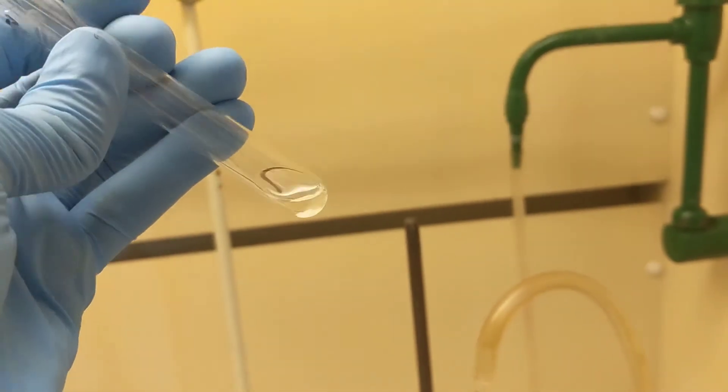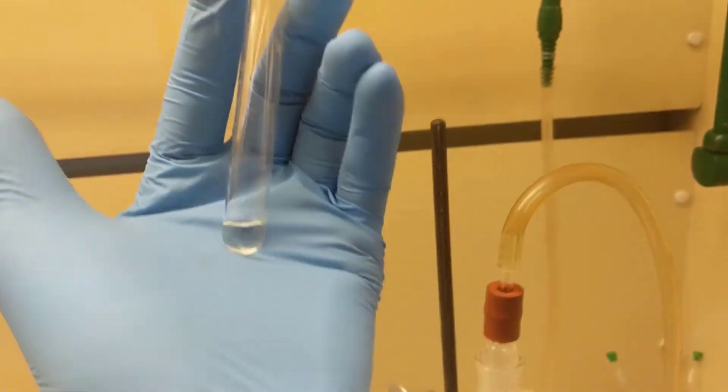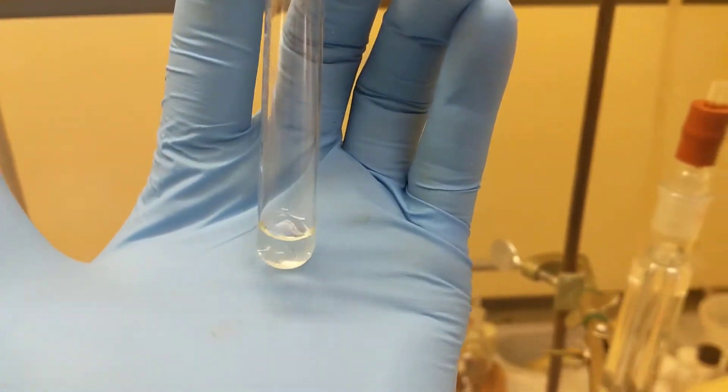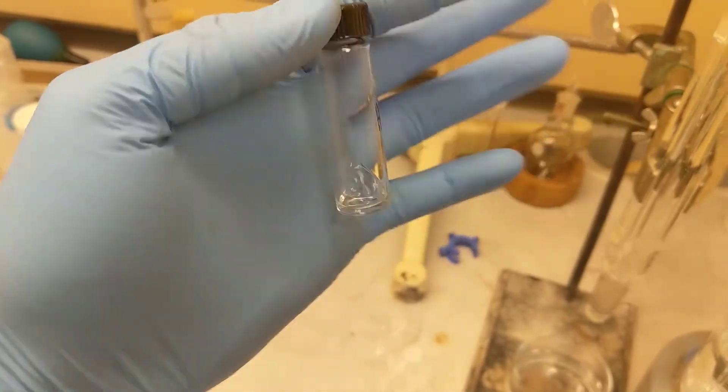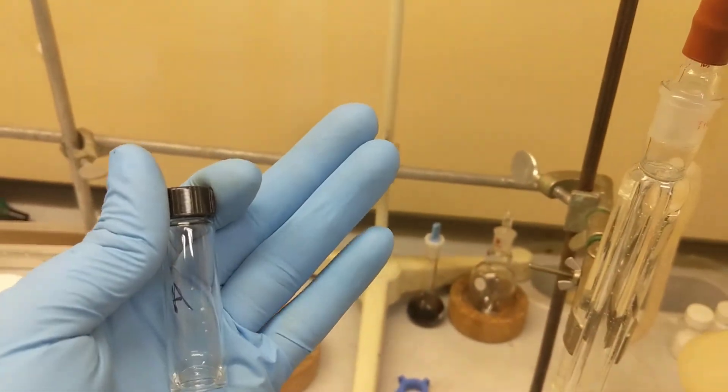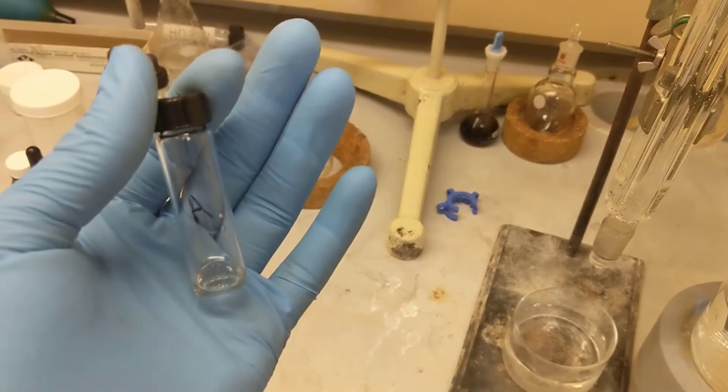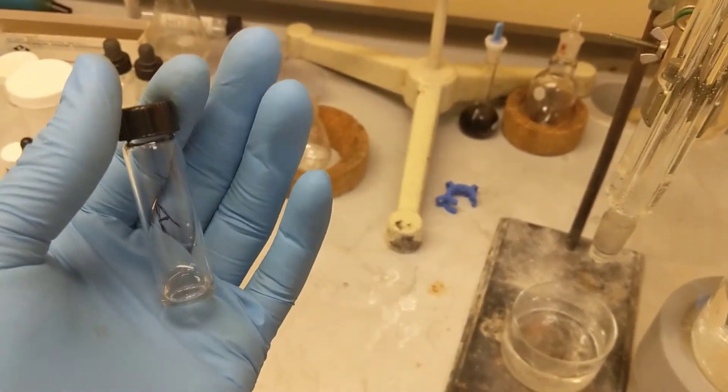Here it is. You can see the anhydrous sodium sulfate down at the bottom. As you can see, it moves freely, no signs of clumping. I think my organic layer is dry, and I'm just going to transfer this into a vial and be done. This is it - the end of Experiment 20A. We have our alkyl halide sitting in here, and I'll have to run this soon.